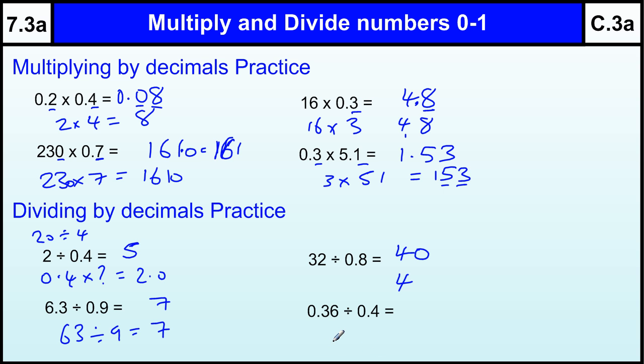And 4 is into 0.36, so 36 divided by 4 is 9. But 9 times 0.4 is going to be 3.6, so we need to make it 0.9 to get the decimal point in the right place, because 4 times 9 is 36. 2 decimal places if we have 0.4 times 0.9 to get 0.36.